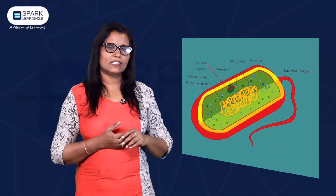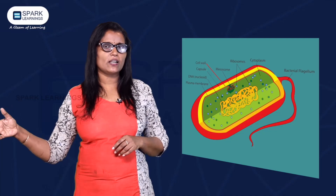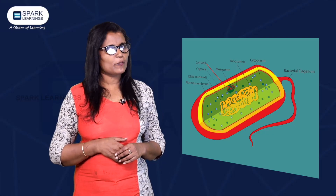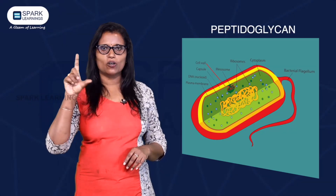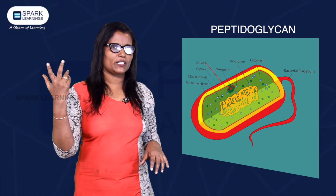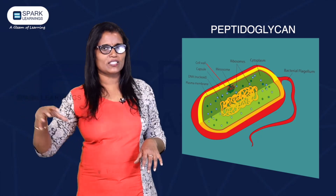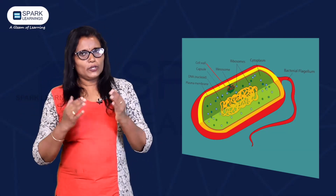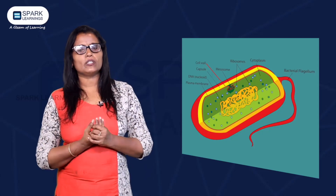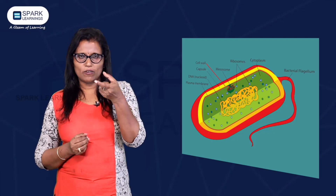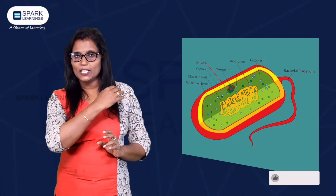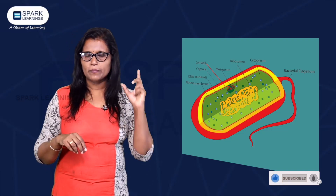The bacterial cell has a cell wall, like plant cells. The bacterial cell wall is made up of peptidoglycan — glycan is made up of protein and sugar. The bacterial cell has a complex layered structure: the outer glycocalyx, the cell wall, and the inner plasma membrane, forming a single unit.